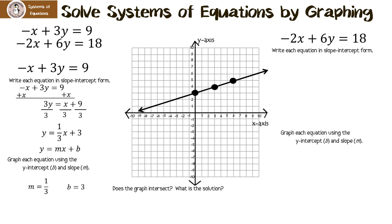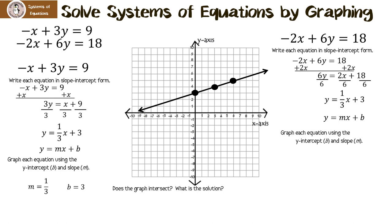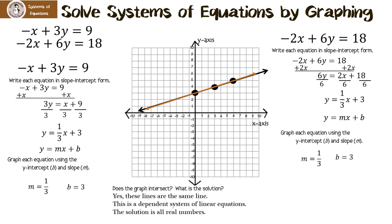For the second equation, add 2x to both sides to get 6y equals 2x plus 18, then divide everything by 6, giving y equals one-third x plus 3. The slope is one-third and the y-intercept is 3 — exactly the same as the first equation! When I graph it, I get the same line. This is a dependent system of linear equations — the solution is all real numbers.